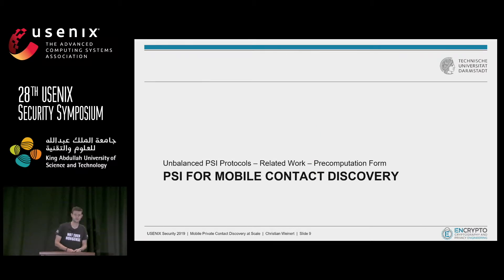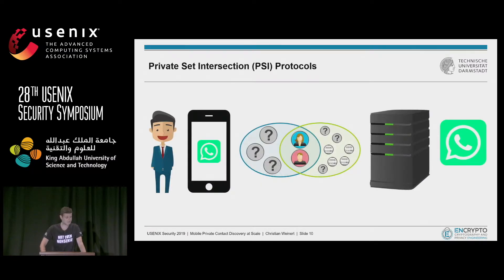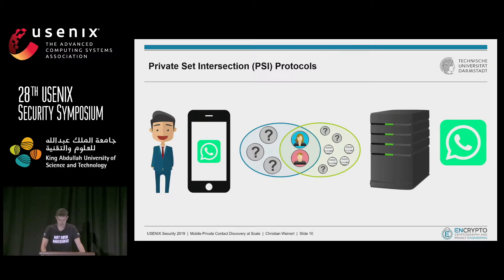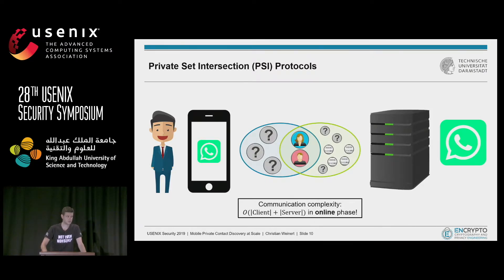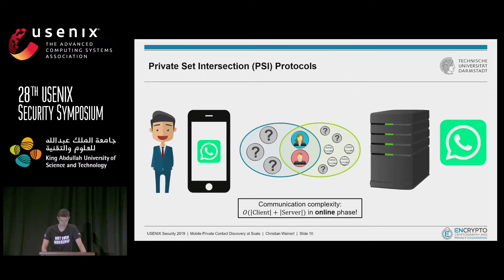As an alternative to these insecure methods, we propose to deploy private set intersection protocols — PSI in short. PSI protocols are cryptographic protocols with provable security that allow two parties to compute the intersection of their input sets, such that nothing but the actual intersection is revealed. The problem with most PSI protocols in mobile contact discovery is that their communication complexity in the online phase depends linearly on the size of both input sets, which is a showstopper considering that the server database can have millions or even billions of entries, whereas the client may have only around 1,000 contacts.